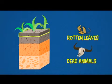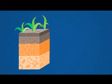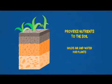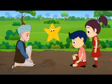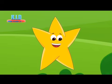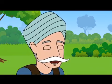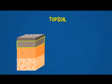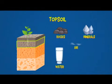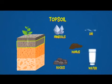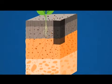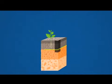The top layer which is visible to us is humus. This layer is made of rotten leaves and decayed bodies of plants and animals. It is dark brown or black. It provides nutrients to the soil and holds air and water for plants. The next level is the topsoil. Shouldn't topsoil be on the top? This is the layer of the earth where plants grow. It is made of bits of rocks, minerals, air, water and humus. The amount of all these changes from place to place. If you keep digging deeper, you will find closely packed soil with some pieces of rocks.